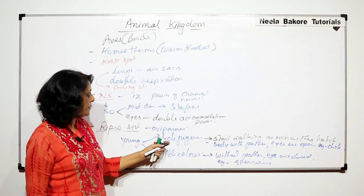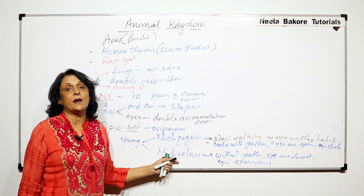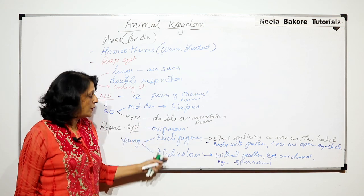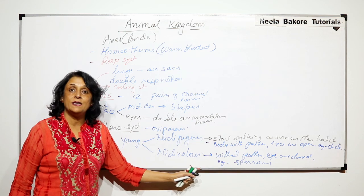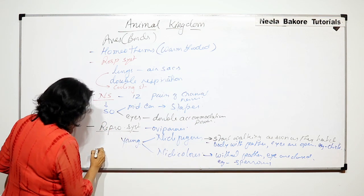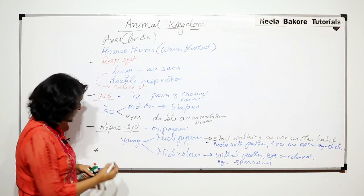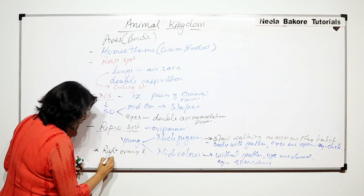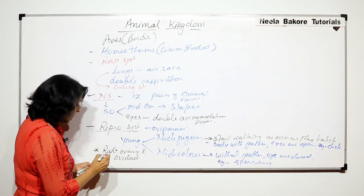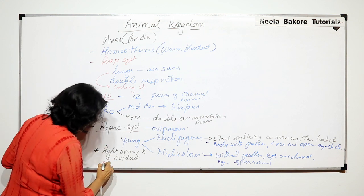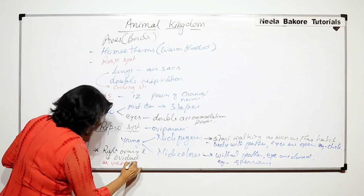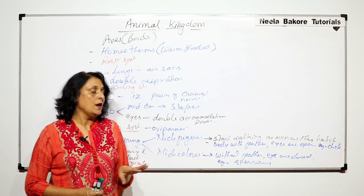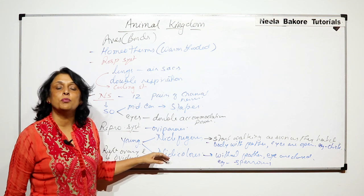So young ones can be nidifugous or nidicolous depending upon the type of bird. Both types are oviparous. As one more flight adaptation, the right ovary and the right oviduct are vestigial. This is also a flight adaptation — only one ovary and one oviduct or fallopian tube is functional.